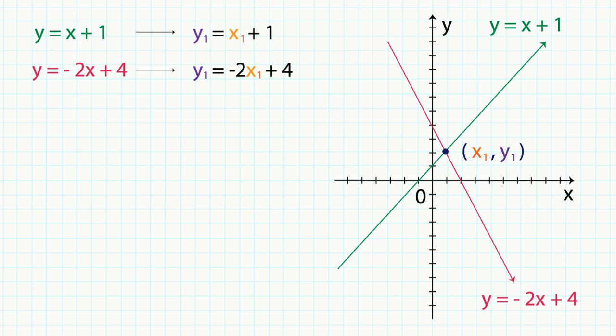Since y1 is equal to both x1 plus 1 and negative 2x1 plus 4, let's equate the two expressions to solve them simultaneously. So we get x1 plus 1 is equal to negative 2x1 plus 4. And if you move the terms around, we get x1 is equal to 1.